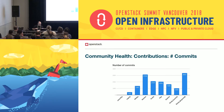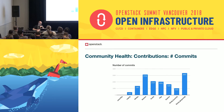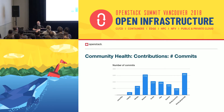Talking about contributions: Newton was a pretty big cycle. Ocata and Pike were shorter cycles, so we don't have that many commits, but it's still a total of 4,000 commits. Queens got a slow start, but Rocky right now has already 1,000 commits. If we continue at the same rhythm, we can reach 3,300 commits — that's a projection, but it would be great if we reach that.